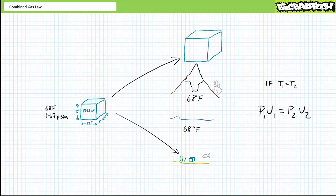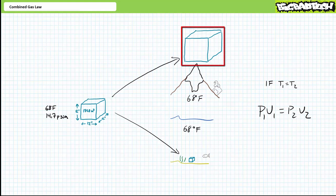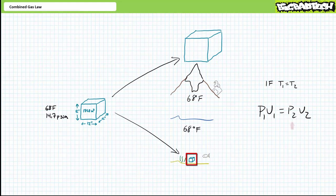We'll examine numerical calculations and the importance of the qualifier absolute in a moment, but for now just consider the fundamental behavior of the statement. Consider the beach as scenario one with a certain P1 and V1. We decrease the pressure on top of the mountain — P2 goes down. Given P1 times V1 must equal P2 times V2, if P2 goes down, V2 must go up. It makes sense. Conversely, we increase the pressure at the bottom of the ocean — P2 goes up, so V2 must go down. Again, it makes sense.